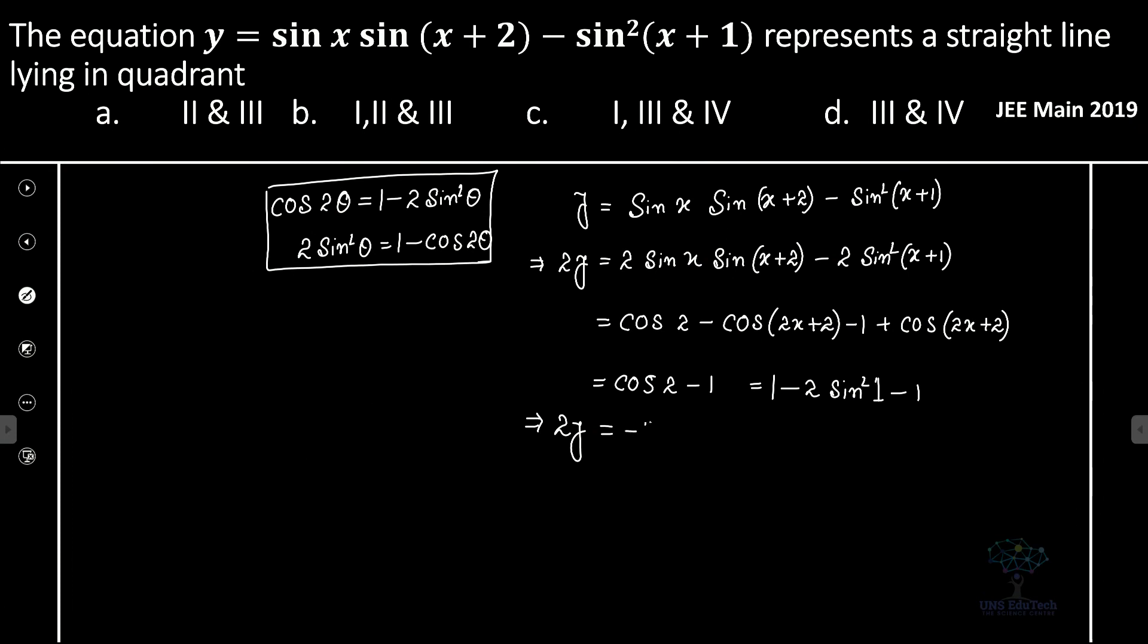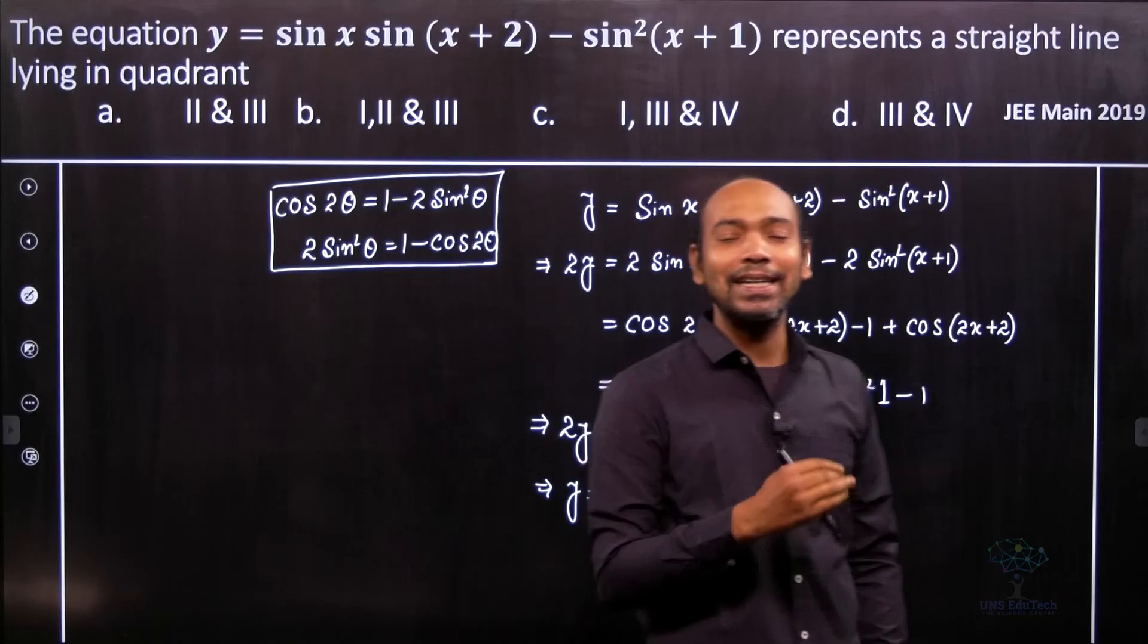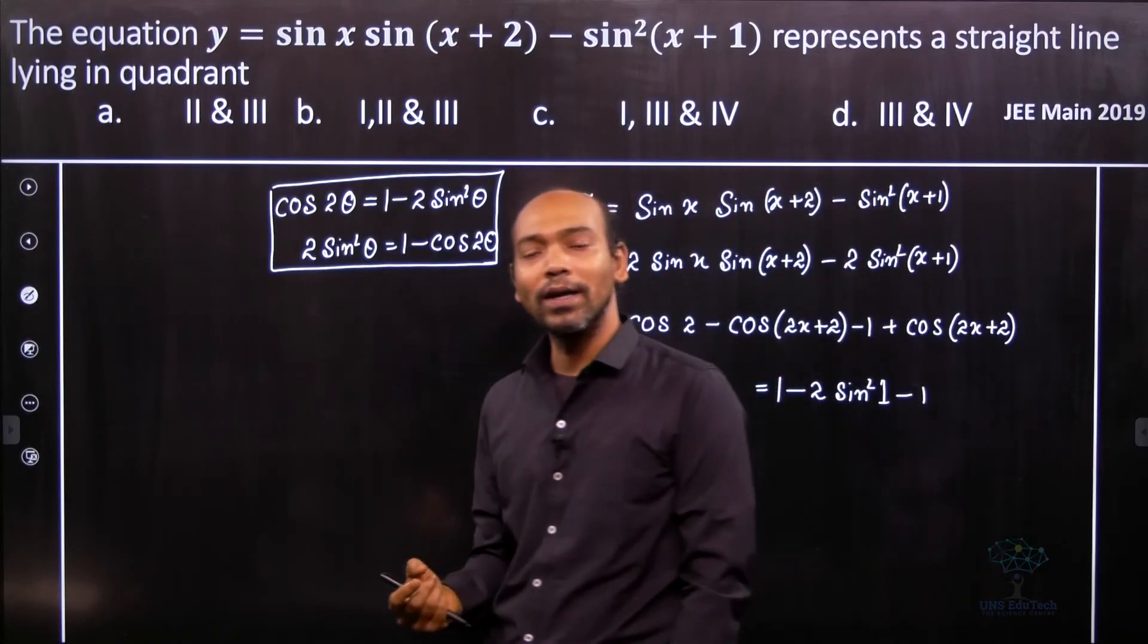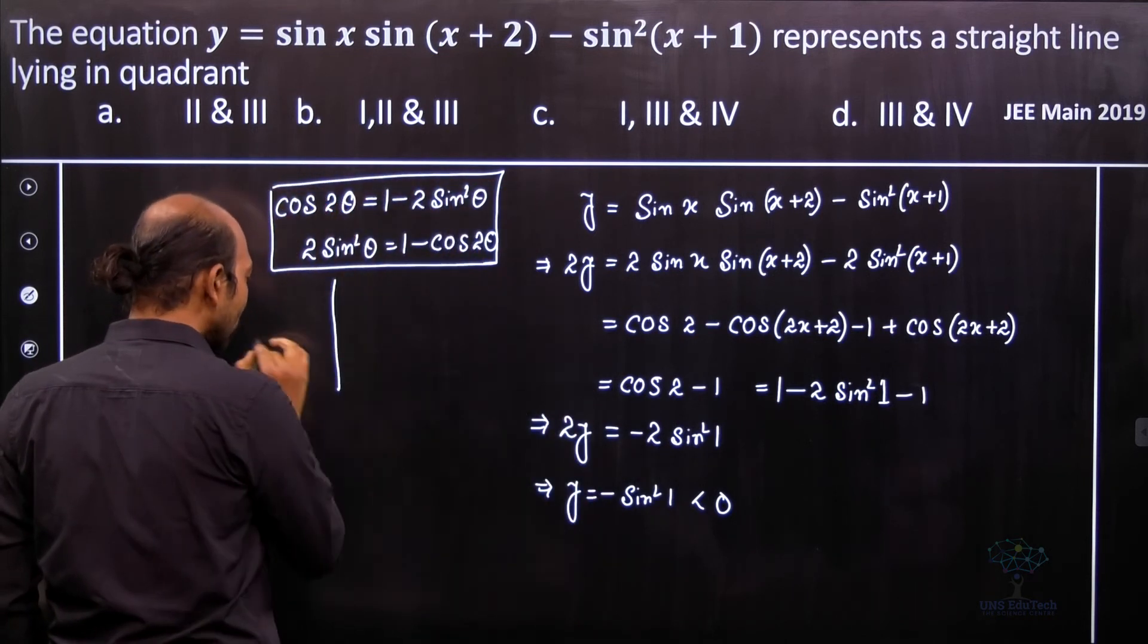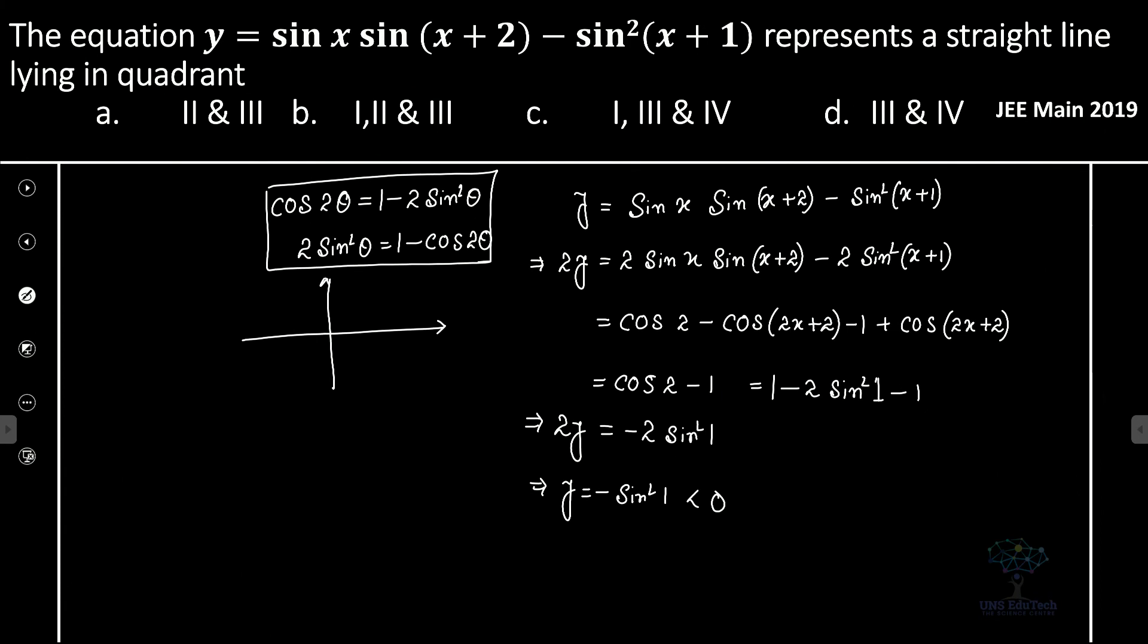Therefore we can write this equals 1 - 2 sin²1 minus 1, which implies 2y = -2 sin²1, so the y value is actually negative sin²1 and that is less than 0. It represents a line and sin²1 is a constant value.